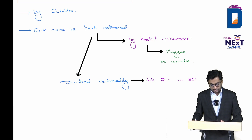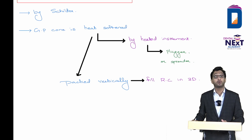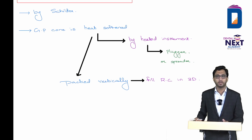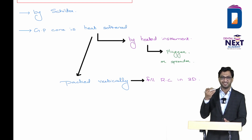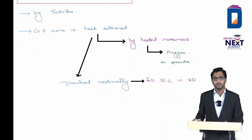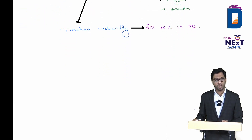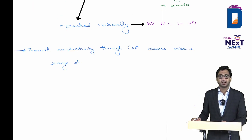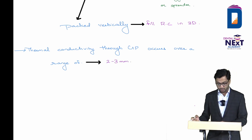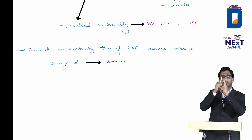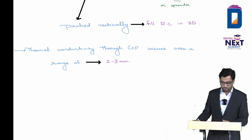Warm vertical condensation fills the root canal in three dimensions, including accessory canals — better than cold lateral compaction. When asked which technique does NOT fill in three dimensions, the answer is cold lateral compaction. Thermal conductivity through the GP cone occurs over a range of two to three mm, meaning the area two to three mm from the heated point also becomes warm.